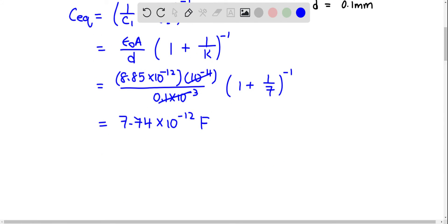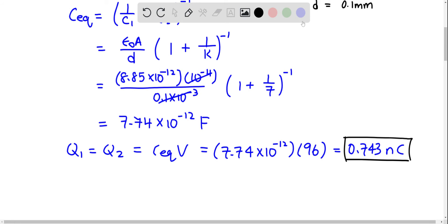The charge on each capacitor, Q1 equals Q2, is equal to C equivalent times V. Let's multiply the equivalent capacitance with the voltage, which is 96, and you get 0.743 C. This is the answer for part A.